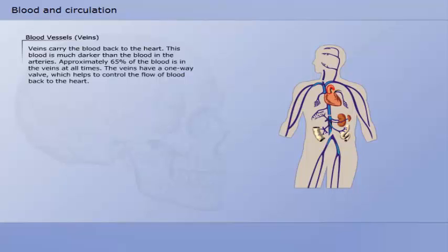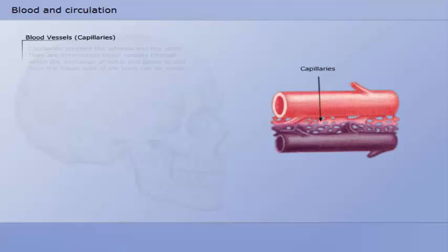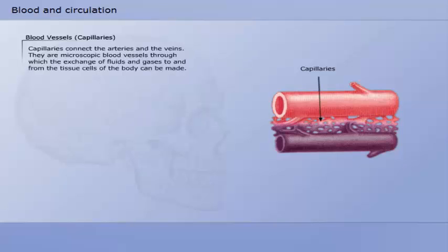The veins carry the blood back to the heart. This blood is much darker than the blood in the arteries. Approximately 65% of the blood is in the veins at all times. The veins have a one-way valve which helps to control the flow of blood back to the heart.